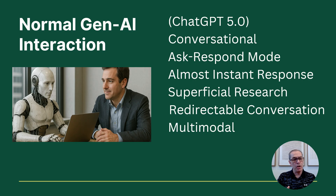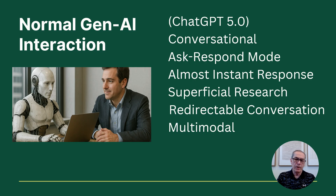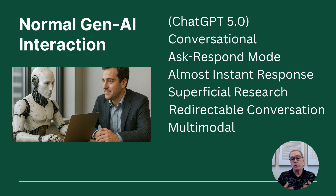Normal ChatGPT is conversational — it's ask and respond. It's very instant in its response, a little bit slower now on ChatGPT 5.0 but still pretty instant. If I'm asking it to do research it's fairly superficial, and I can redirect the conversation easily. It's also multimodal. So that's normal gen AI, what we use day to day.